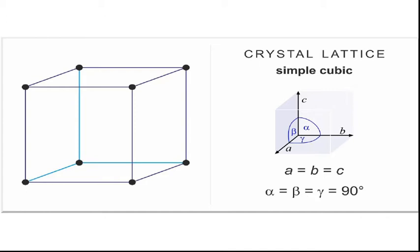We see that this is an orthogonal system — that is, all alpha, beta, gamma, the angles between the axes, are always 90 degrees. The sides of the cube, A, B, and C, are all the same in dimension, and that is why it is a cubic structure. We call it simple cubic because there are lattice points only at the corners of the cube.